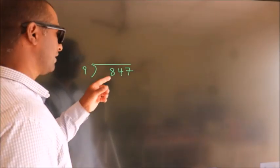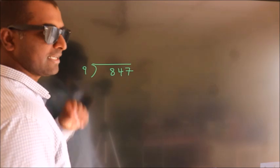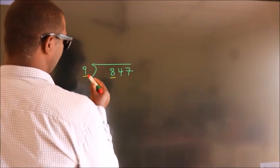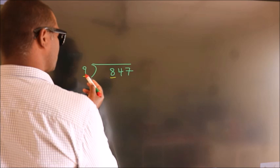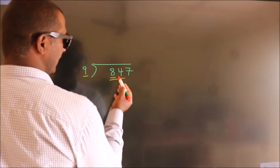How to divide 847 by 9? See, here we have 8, here 9. 8 is smaller than 9, so we should take two numbers, 84.